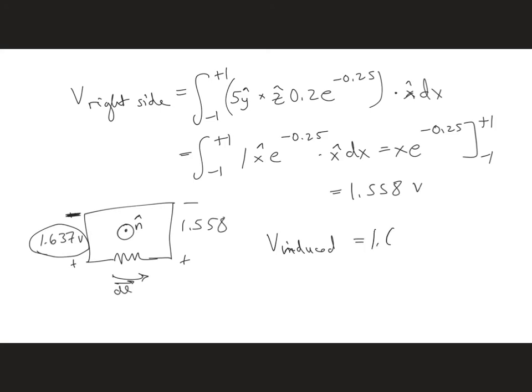We get 1.637 and subtract 1.558 going around our entire loop, which gives us a total of 0.079 volts.